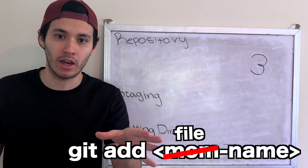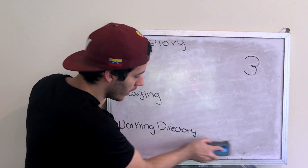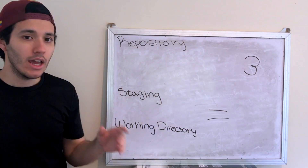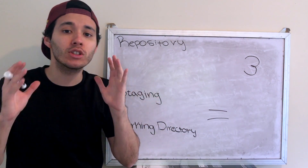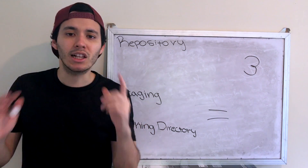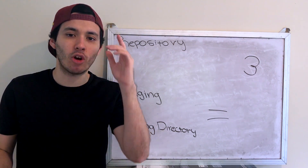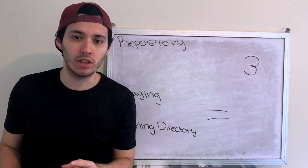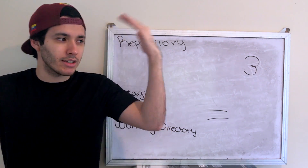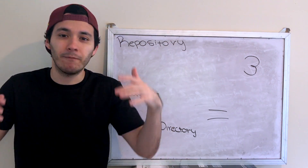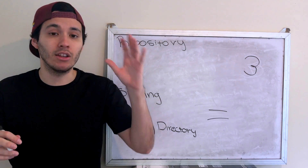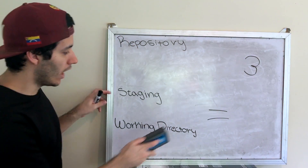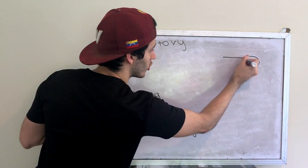So the file goes from the working directory to the staging area. Now to pass it to the repo, you use git commit, including a message describing exactly what you did — like 'printing hello world'. And now it goes from the staging area to the repository.